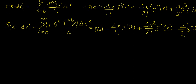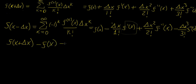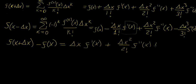Now let's say we want to find the first order derivative. We want to isolate that term from the series. One approach is to take the Taylor expansion for f(x + Δx) and subtract f(x) from both sides, eliminating the leading term. This leaves us with delta x times f prime of x, followed by higher order terms: delta x squared over 2 factorial times f double prime of x, and so on.